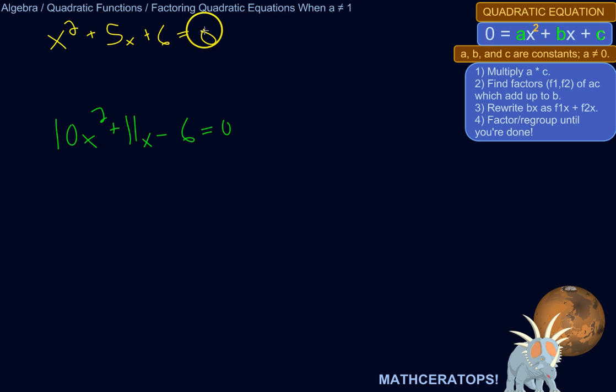And you want to factor a quadratic equation. One way to solve it is to factor it, because then it gets pretty easy to solve. So when a is 1, it's usually fairly easy to factor.